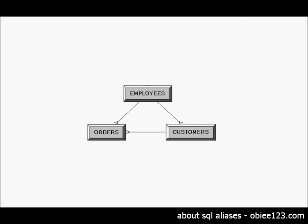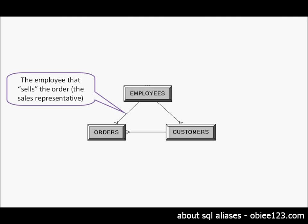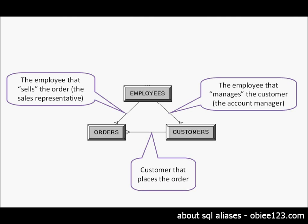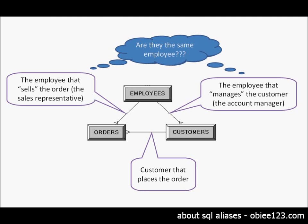Let's take a look at what it means. The orders table is related to the employees table in the following way: the employee represents the employee that sells the order — the sales rep. The customers table is related to the orders table because the customer is the one that places the order, and the employee that manages the customer is depicted in the third relationship. The question that arises is: for a given order, are these employees the same? The answer is no, that's not necessarily true — the employee that sells the order is not necessarily the employee that manages the customer.